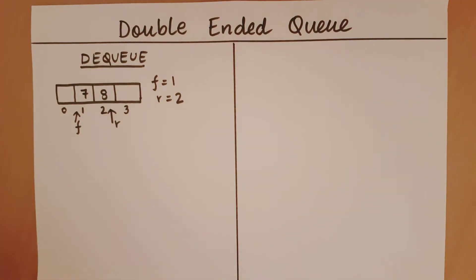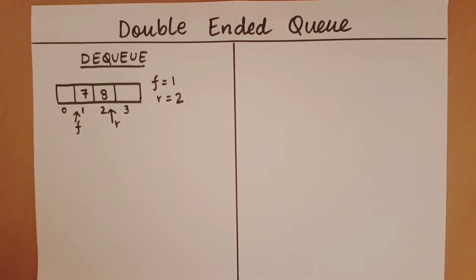A double-ended queue can have four operations: add from the front, add from the rear, delete from the front, and delete from the rear. Let's look at how each of these operations works.